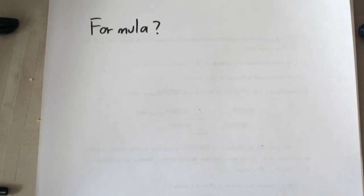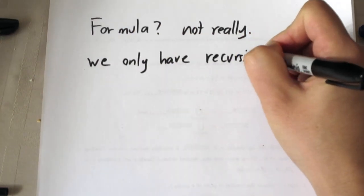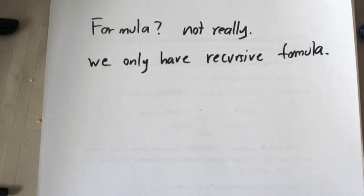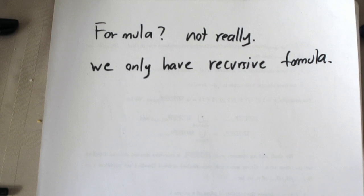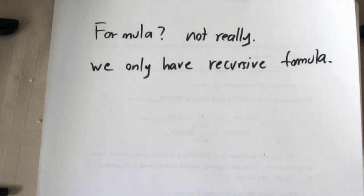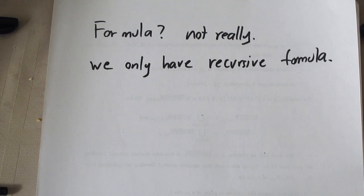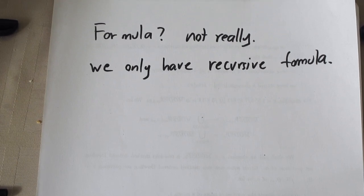Is there any nice formula that we can just plug numbers into and get 25? The answer is: not really. We don't have a closed-form formula for S(n,k), but we do have a recursive formula. If you know the value of something smaller — like S(4,3) or S(5,2) — you can use this formula to figure out S(5,3).